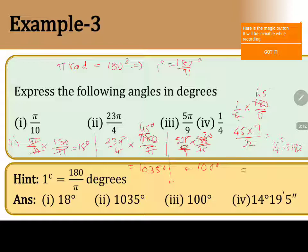Convert this into minutes. 14 degrees plus 0.3182. 0.3182 times 60, simplify, you will get 14 degrees 19 minutes 5 seconds.